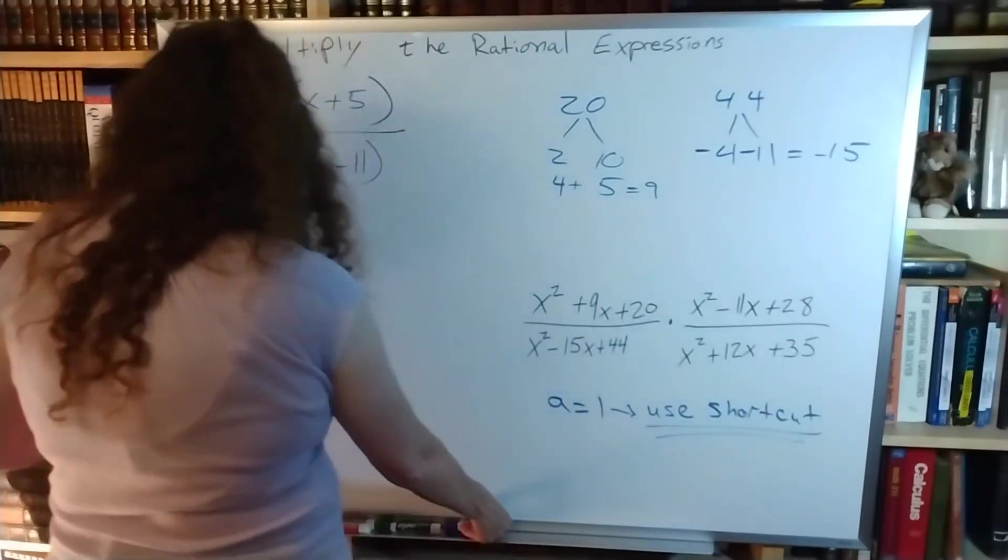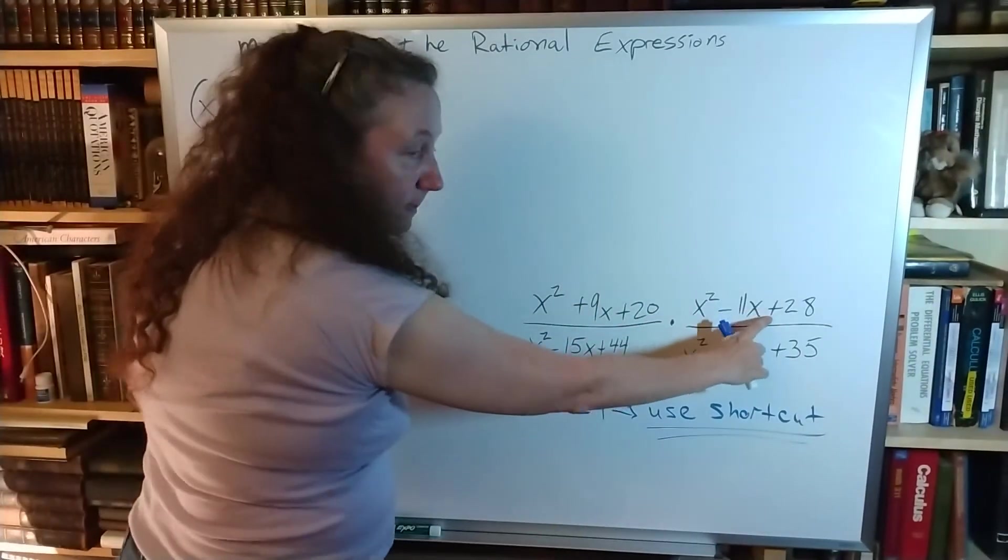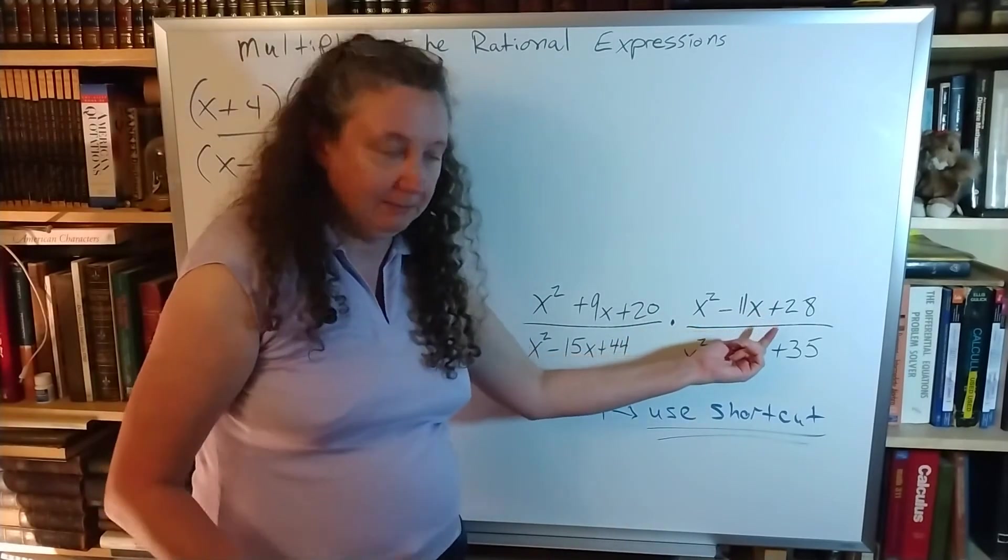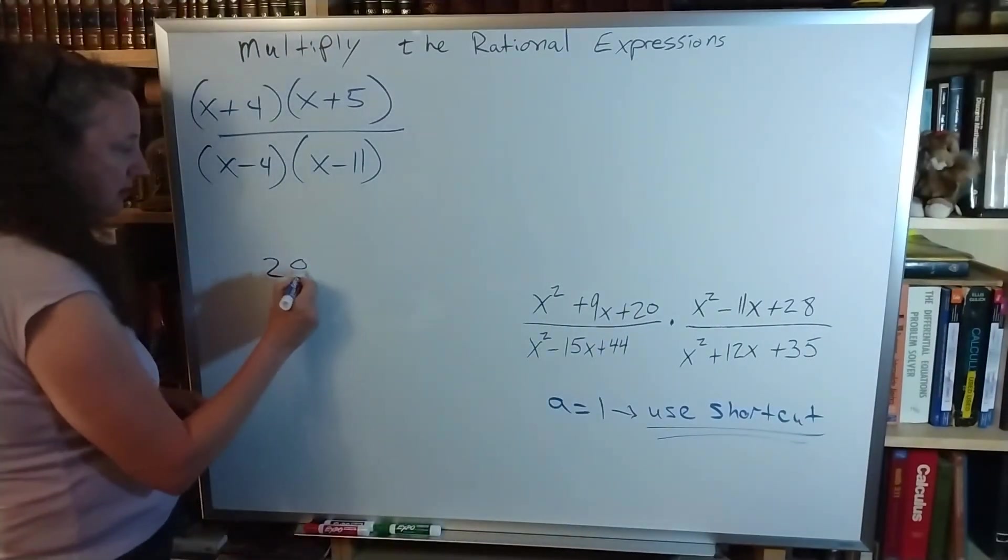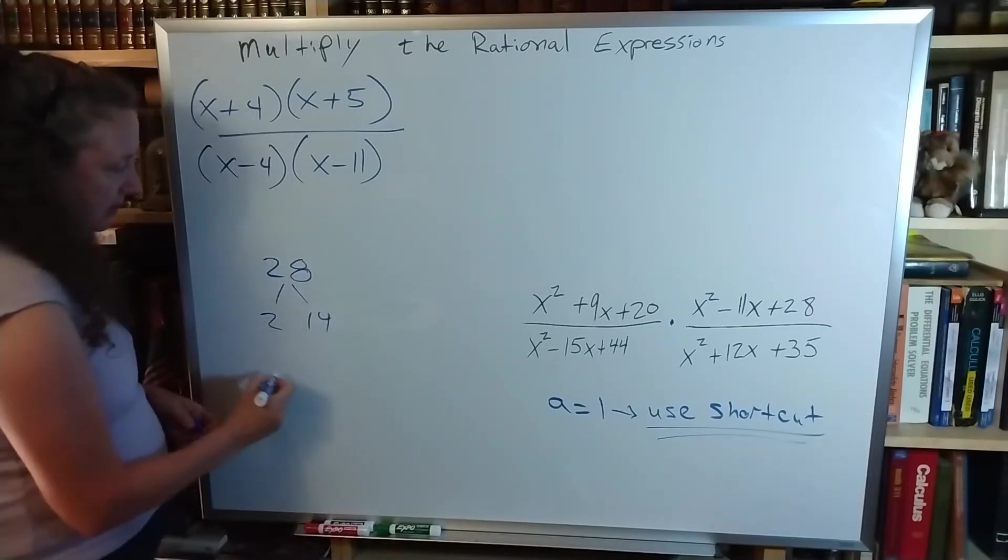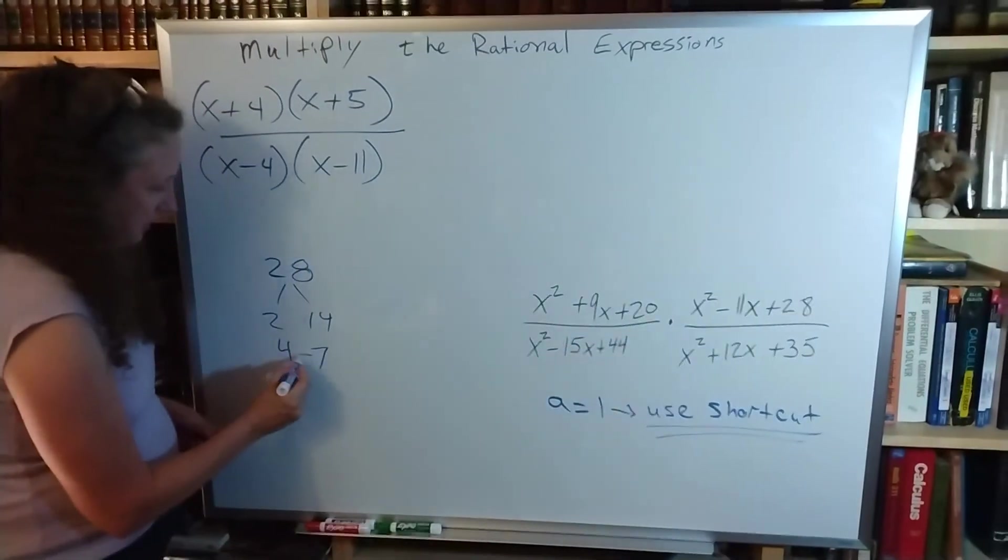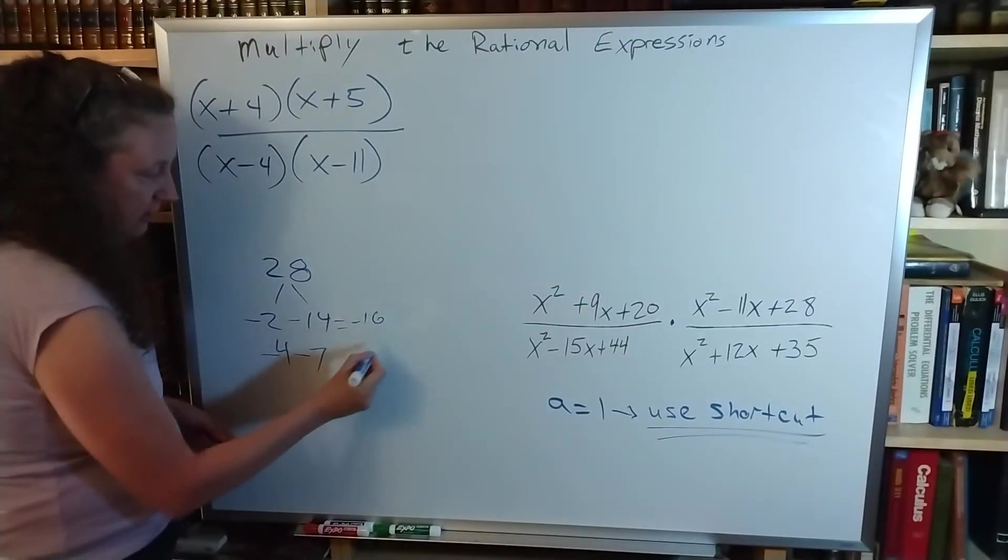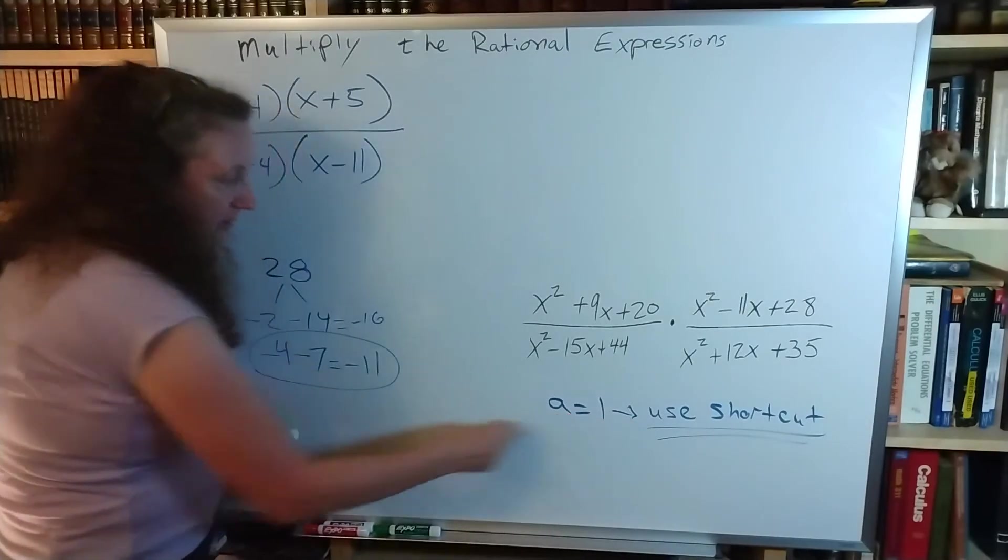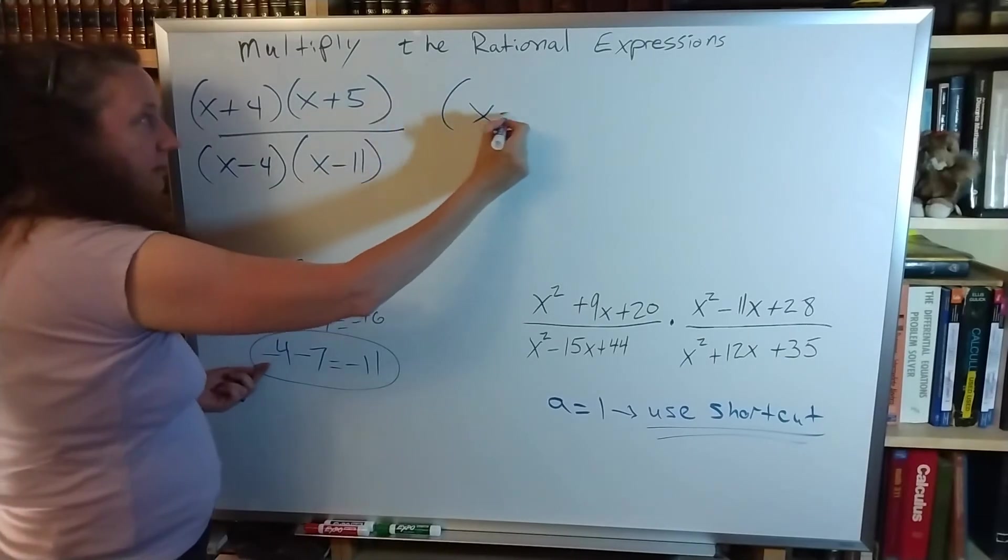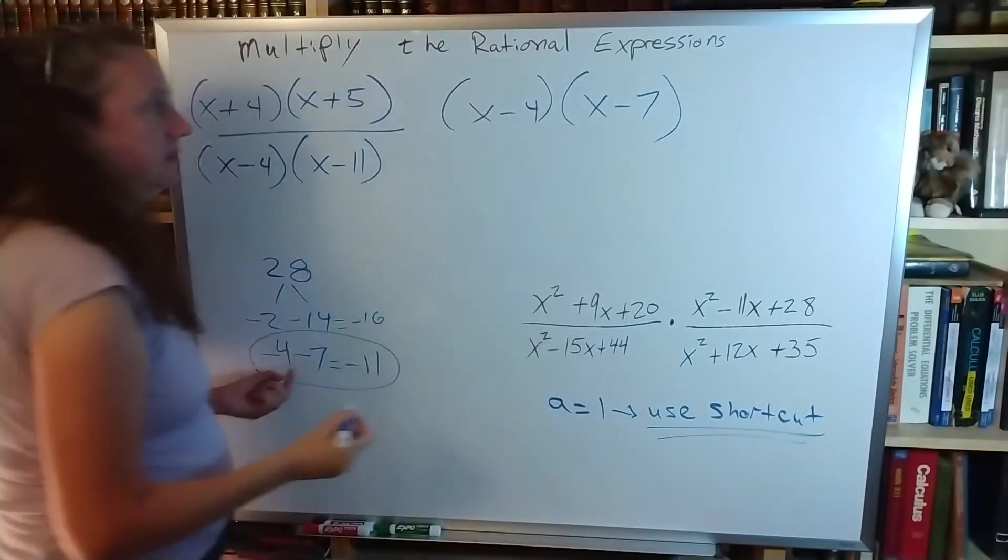I have to look at the second fraction here. Positive c, so same sign. Negative b, so the sign is negative. So I'm taking my 28. Could be 2 and 14. Could be 4 and 7. I want them to be the same sign, the negative sign there. That would give me negative 16. And this gives me negative 11. So I want to use that. Again, a equals 1. I'm going to use my shortcut. x minus 4 times x minus 7. Over.